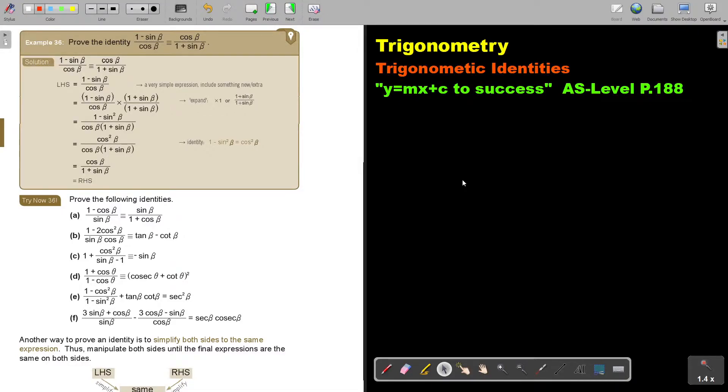In this video, we will continue with trigonometric identities. You will find this on page 188 in the Namibia AS level mathematics textbook y equals mx plus c to success.